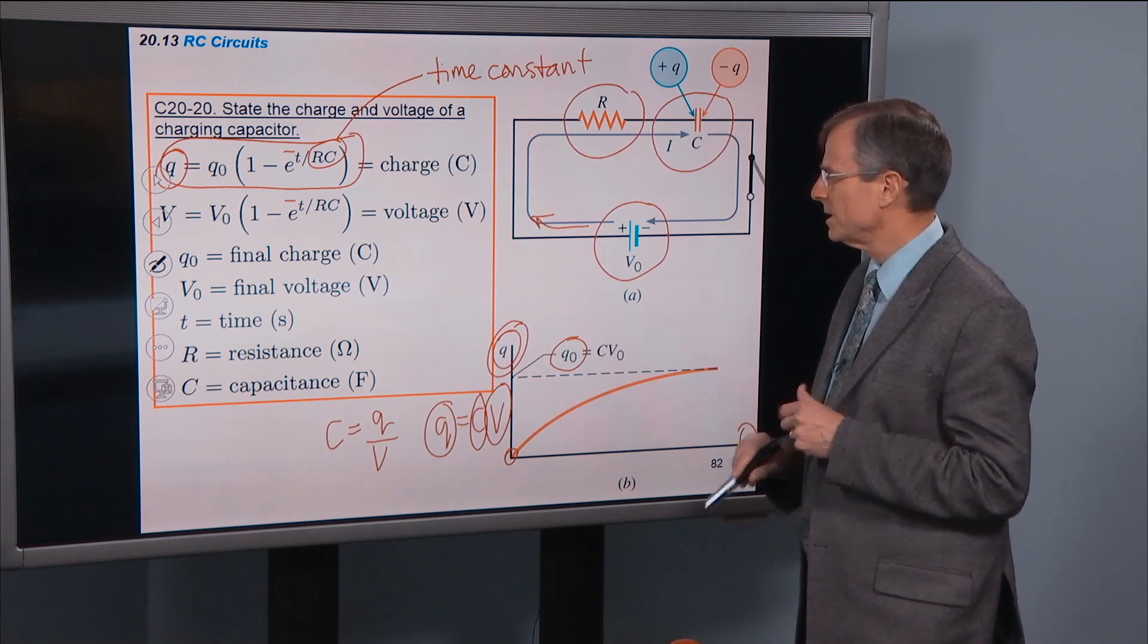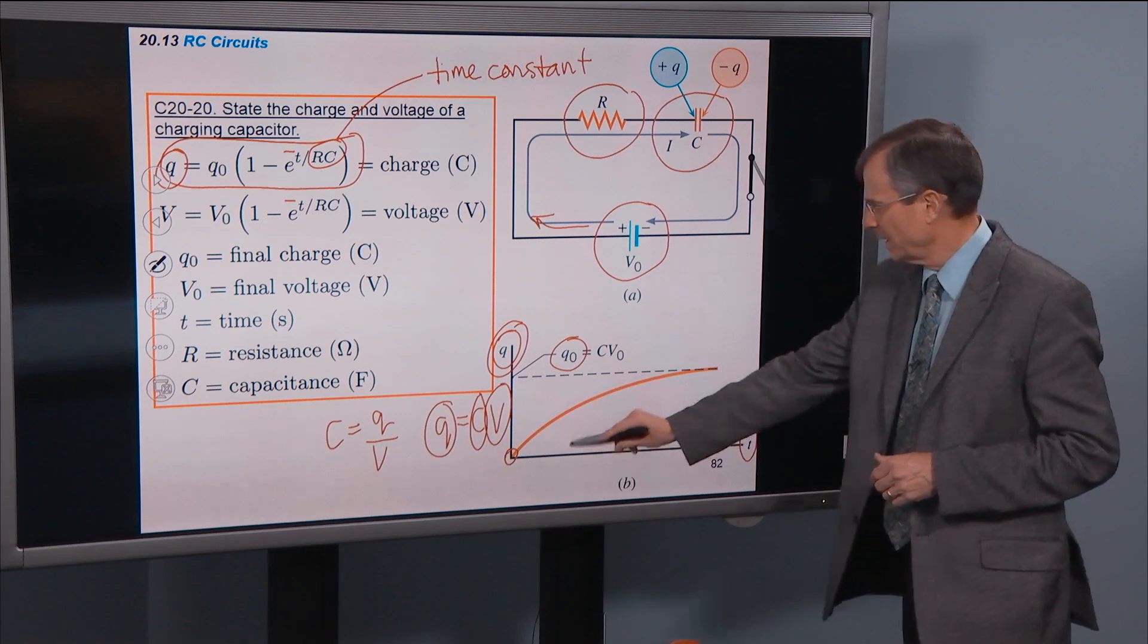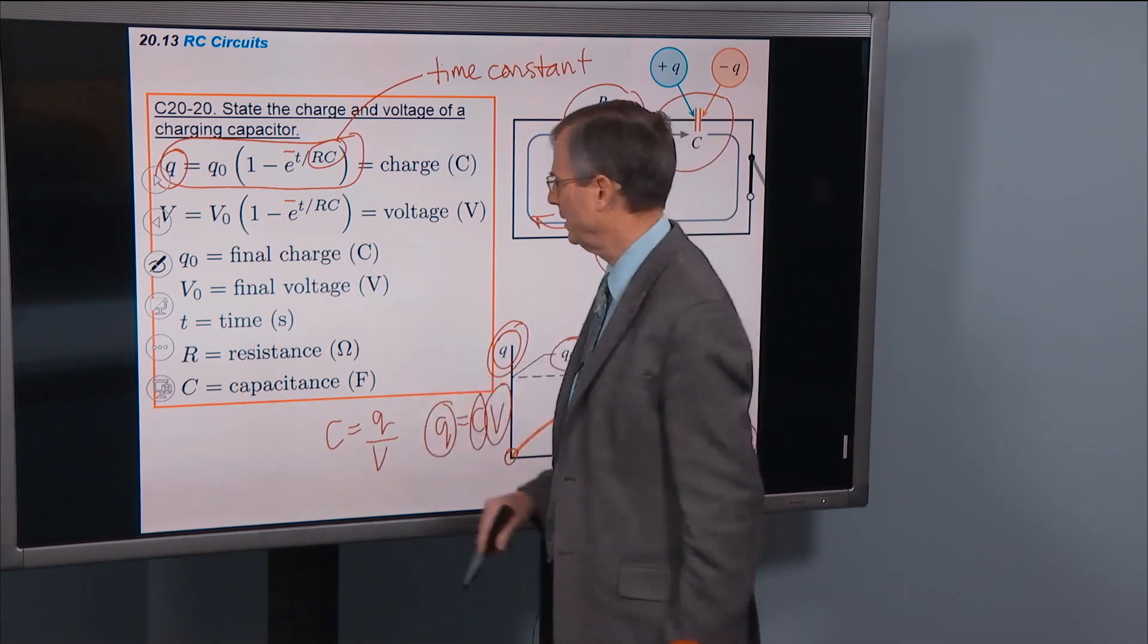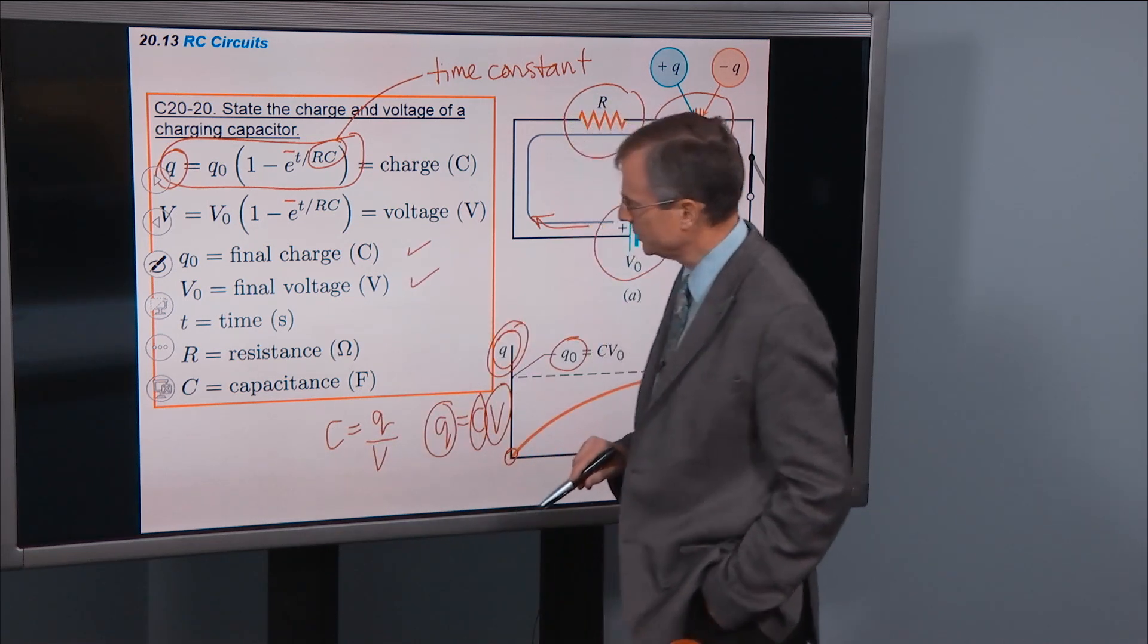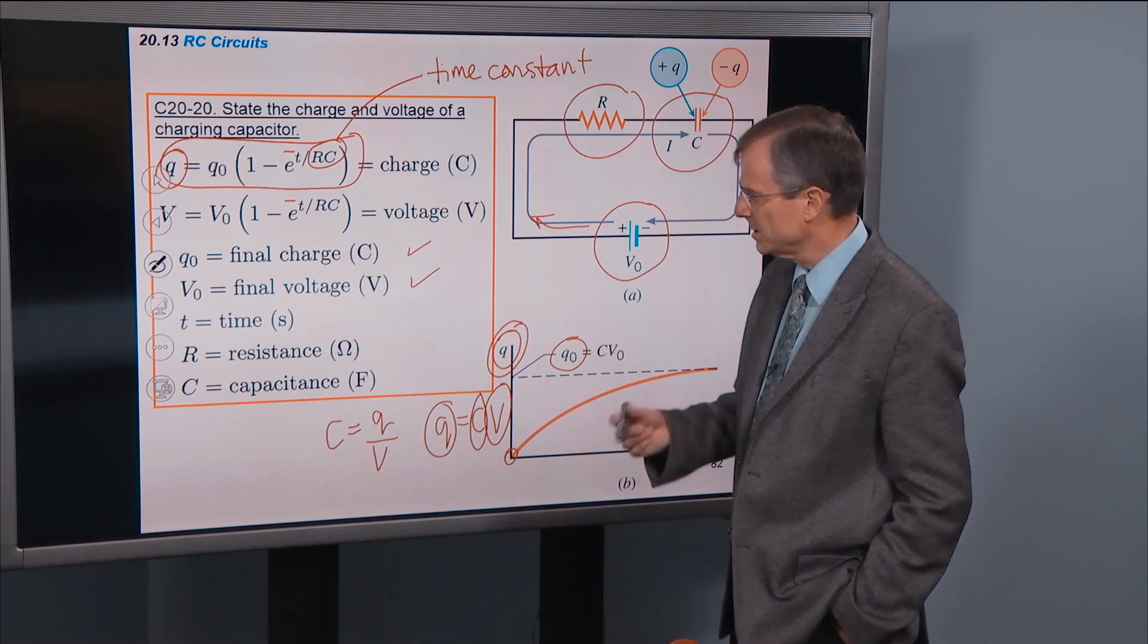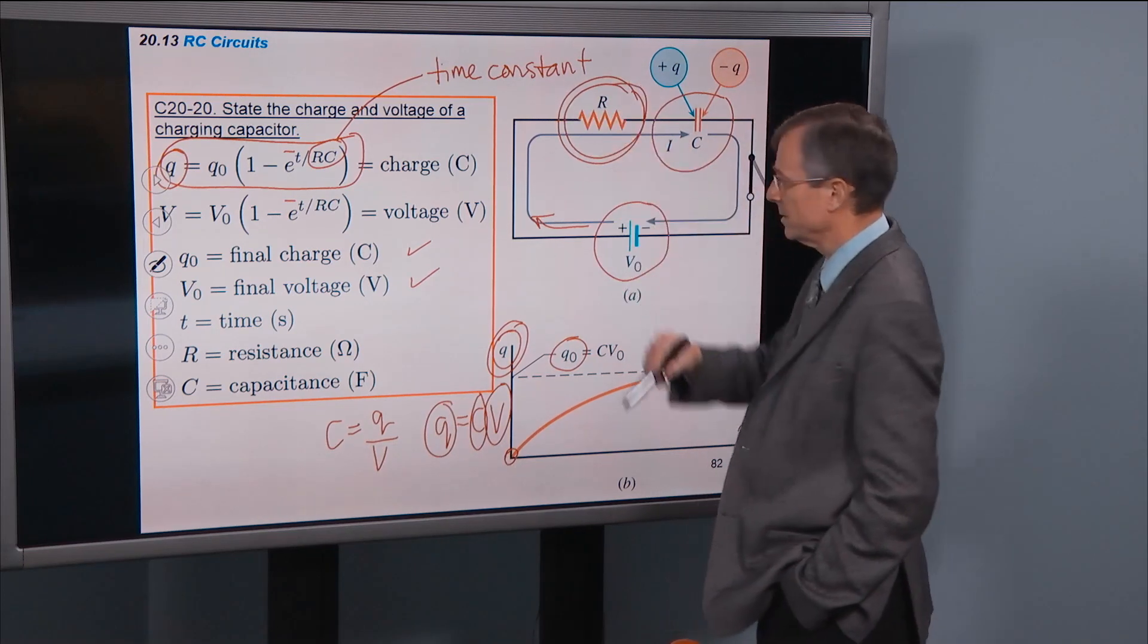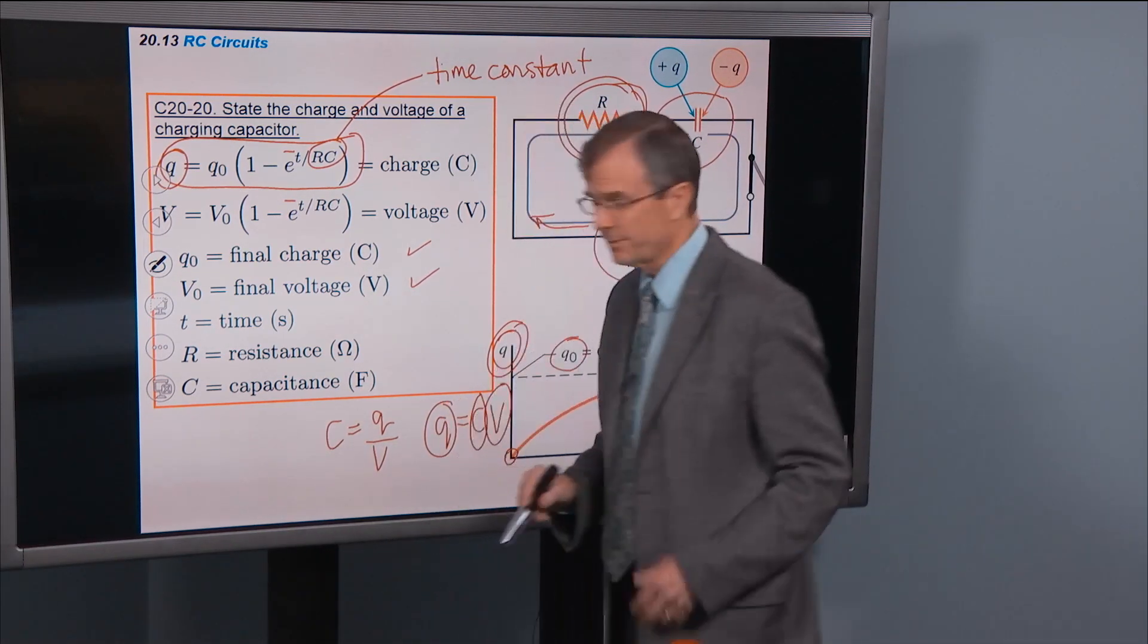As t goes to infinity, as this time approaches infinity, the charge will approach q0 and the voltage will approach V0. So q0 is the final charge, V0 is the final voltage, t is the time measured in seconds, R is the resistance - that's this resistor right here, resistance of the resistor in the circuit - and C is the capacitance measured in farads.